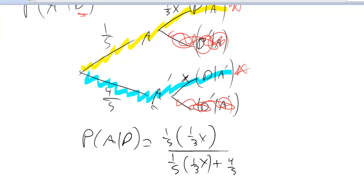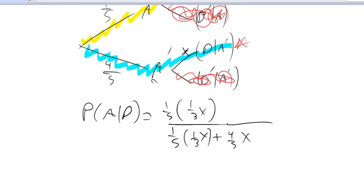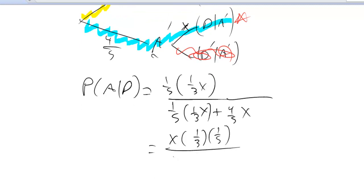Now the kind of neat thing here is if you just use a tiny bit of algebra, you will see that we can factor an X out of the numerator, leaving us with one-third times one-fifth over, and then the denominator, factor X down there too, which would give us one-third times one-fifth plus four-fifths, and then we factor X out of all that.